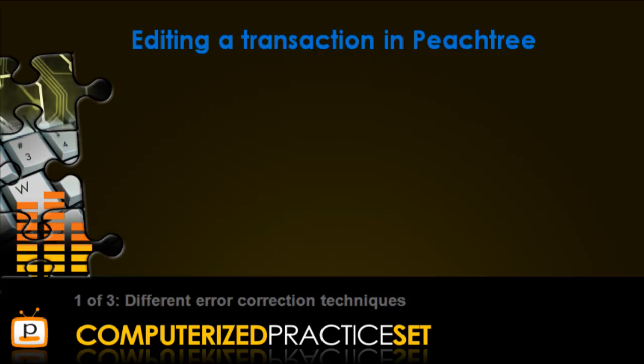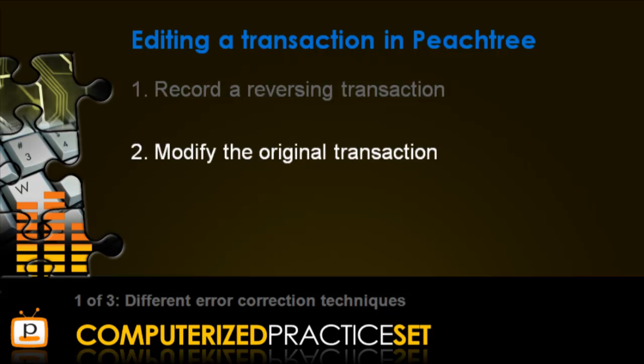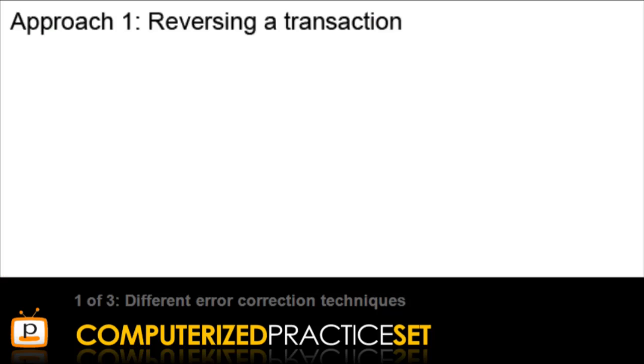Peachtree provides two ways to edit a transaction. The first is to record a reversing transaction, and the second is to modify the original transaction. We'll consider both of these in turn, and start with the first approach: reversing a transaction.